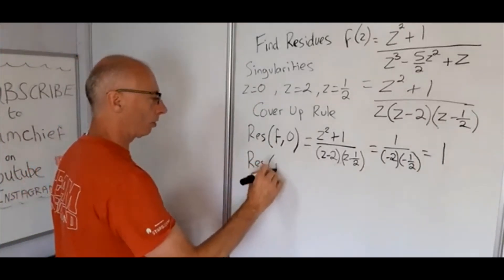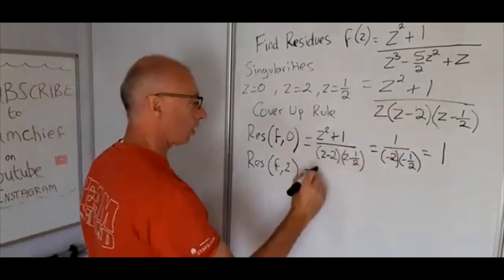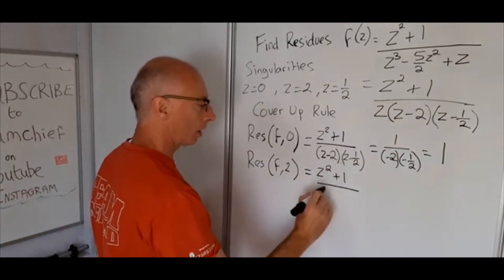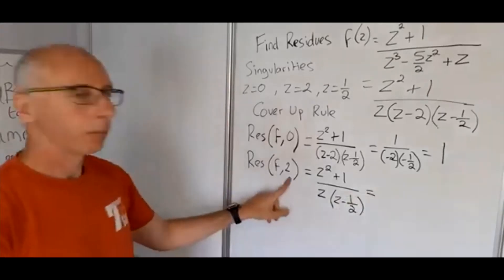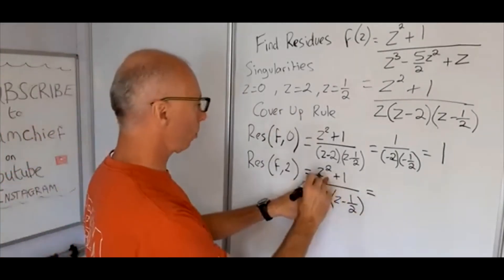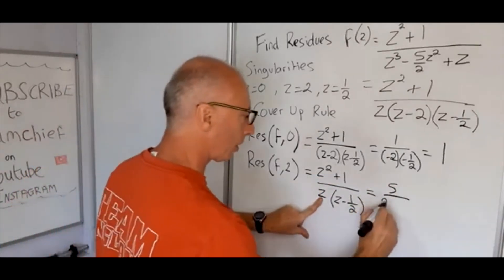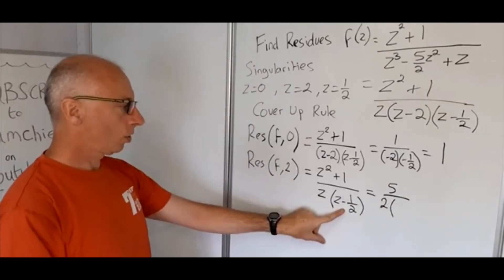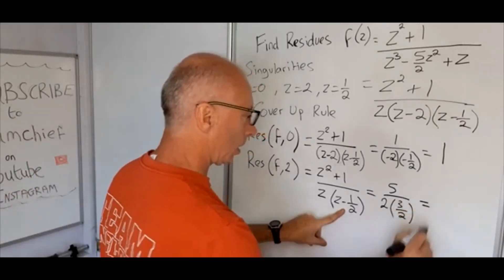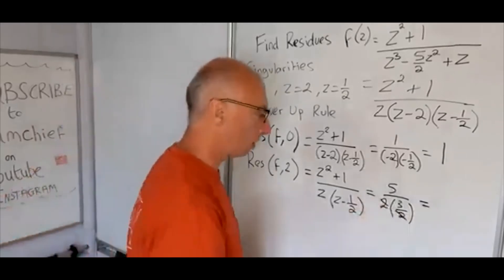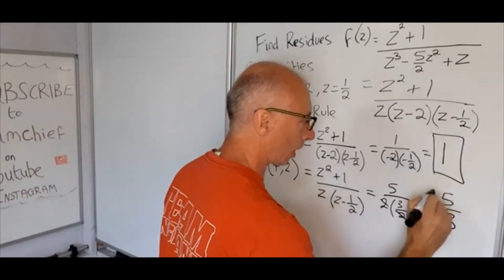Now we find the residue of f at 2. So now we're going to cover up this one. So it's z squared plus 1 times z, z minus a half. Plug in 2 for all the z's. So 2 squared is 4 plus 1 is 5. That's going to give us a 2. And that's going to give us 2 minus a half, which is 3 over 2. So these ones cancel out. That's going to give us 5 over 3.